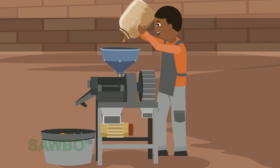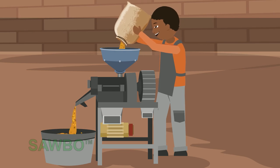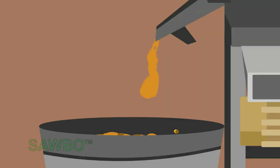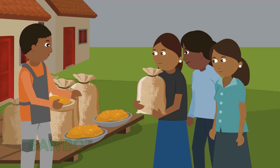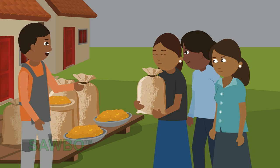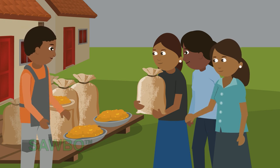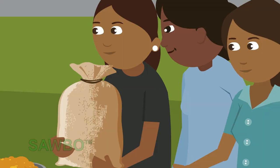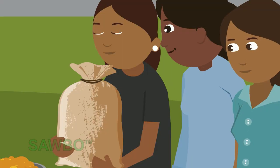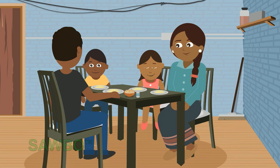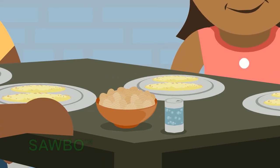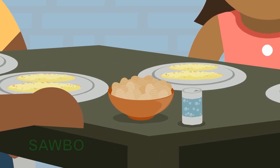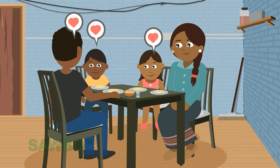The miller grinds the maize and is happy with the quality and the quantity. When he takes the flour to the market, he sells flour to many women for a good price. A woman cooks the maize flour for her family, and her family thanks her for the good food.